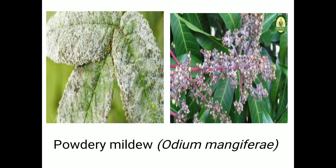Photosynthetic activity is completely stopped due to powdery mildew attack. For perpetuation, the primary source of infection is dormant mycelium and the secondary source is airborne conidia. For management, spray 0.2 percent wettable sulfur or Carbendazim 0.1 percent. Systemic fungicides such as Hexaconazole 5% EC at a rate of 0.05 percent can also be applied.